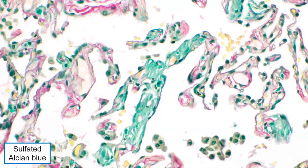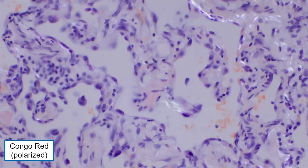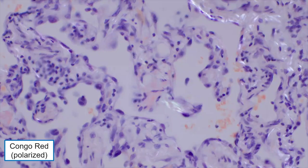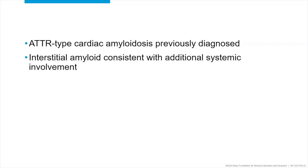Here are our stains. The sulfated alcian blue nicely highlights a ton of material staining green. Then the Congo red shows that apple green birefringence — but in contrast to how much green you see on the alcian blue, just a little bit of apple green here, maybe a little there. So it can be challenging sometimes to make these diagnoses. This patient did also have a history of ATTR type cardiac amyloidosis that was previously diagnosed, and now it was in his lungs.